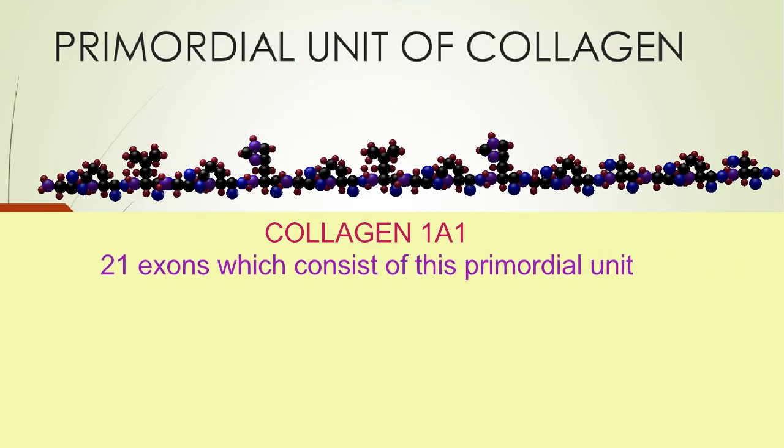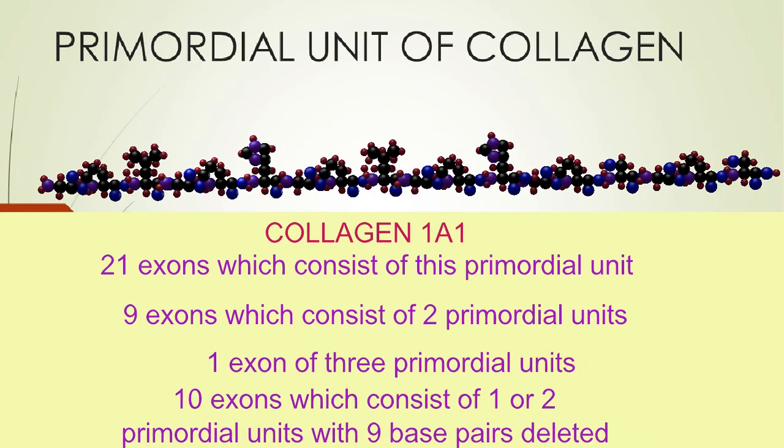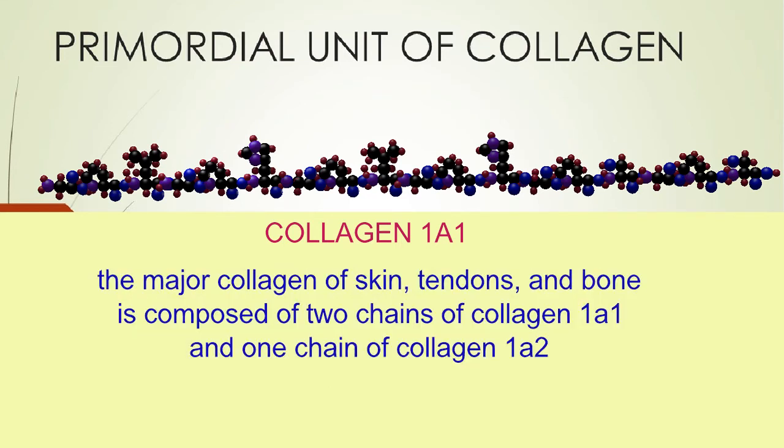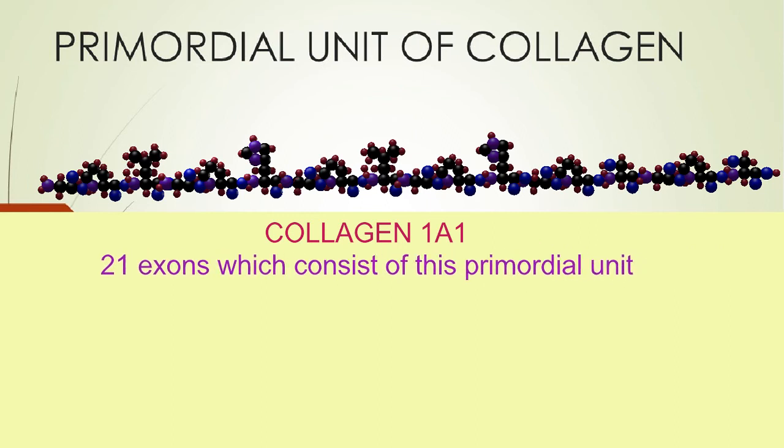Nine exons code for two primordial units back to back. One exon codes for three primordial units. And ten exons code for one or two primordial units with nine base pairs deleted. This is the organization of the collagen 1 alpha 1 gene.